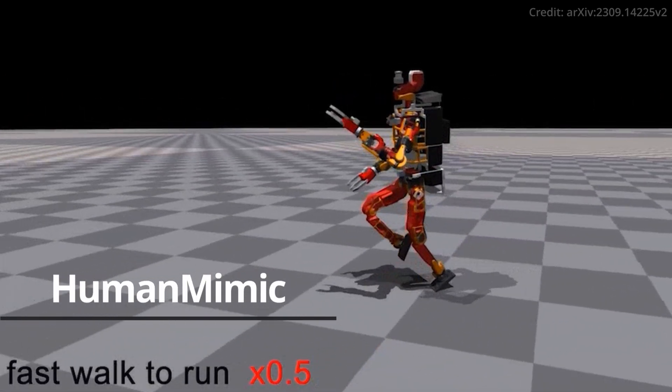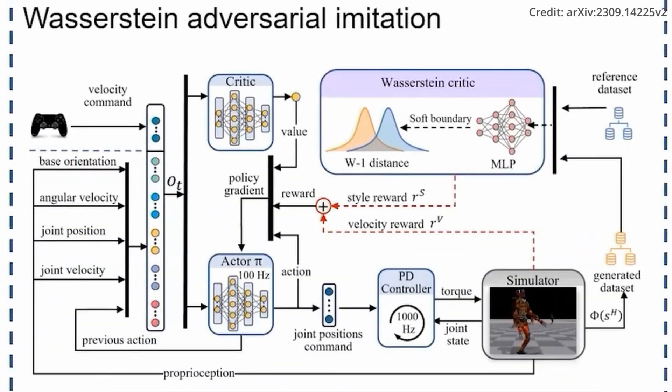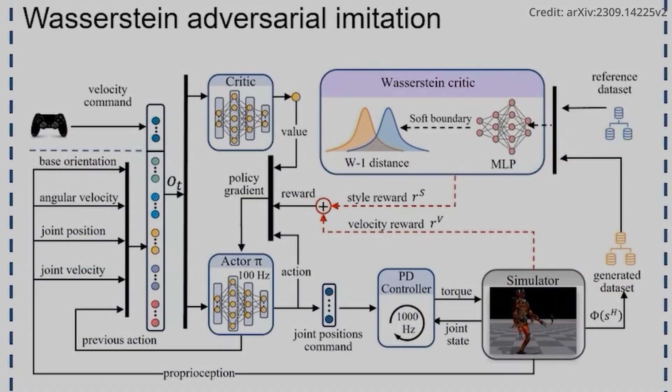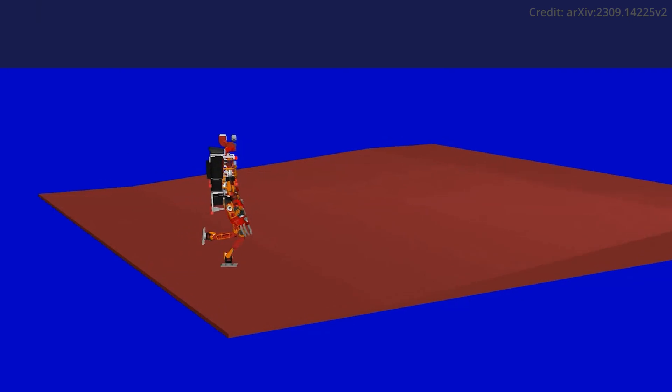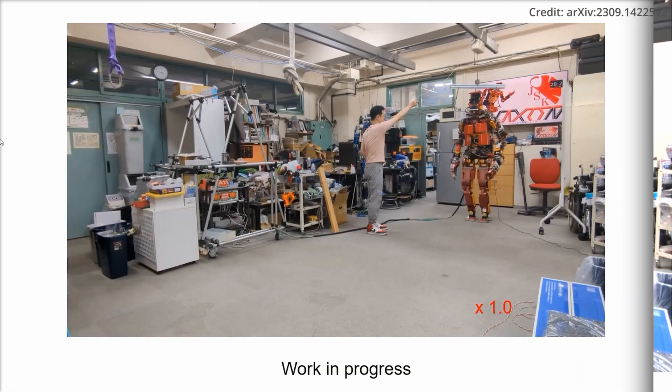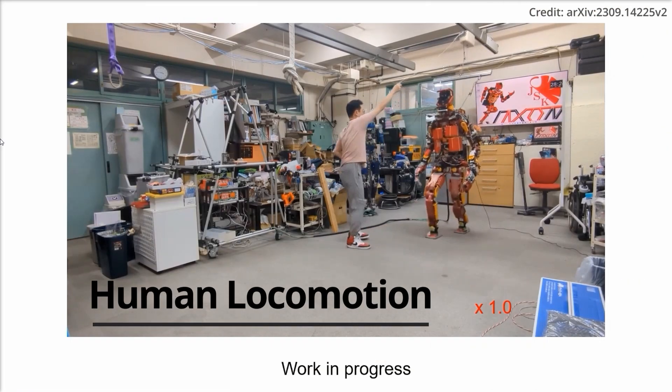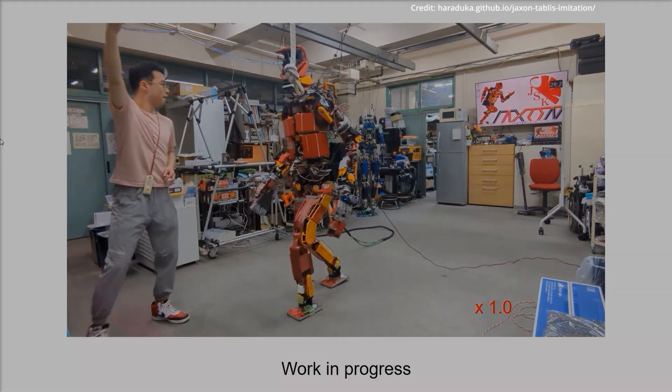these researchers have introduced the Wasserstein adversarial imitation learning system as a breakthrough leap towards enabling humanoid robots to mirror human locomotion with an unprecedented level of fluidity and precision.